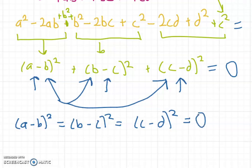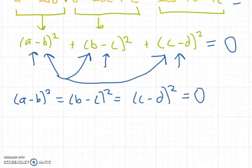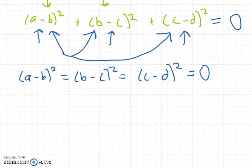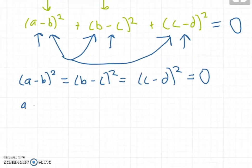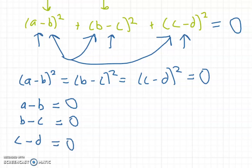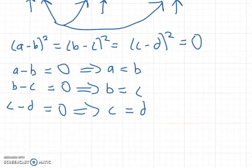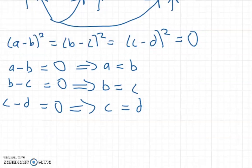And the only way for the square of something to be 0 is if the number itself is 0, which means a - b has to be 0, b - c has to be 0, and c - d has to be 0. So this means a must equal b, b must equal c, and c must equal d. And using these statements, this will give us a = b = c = d.